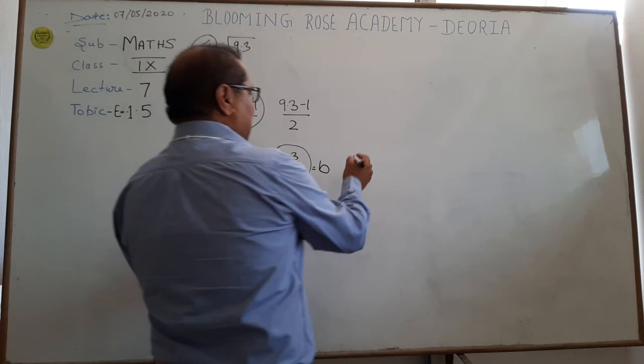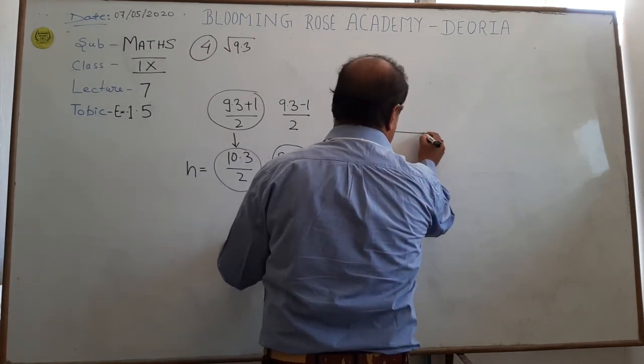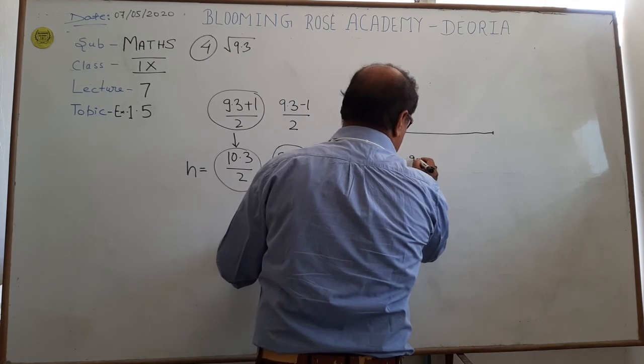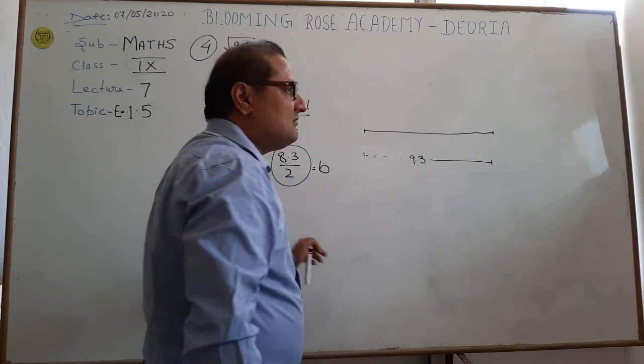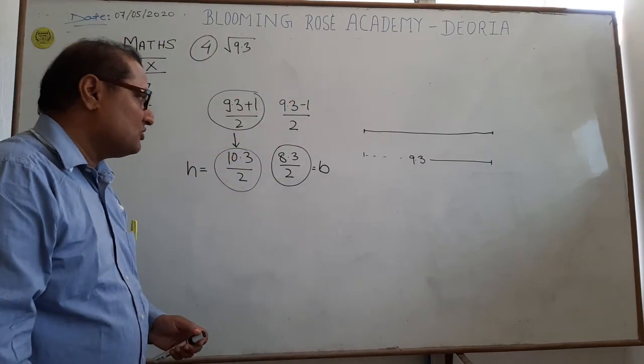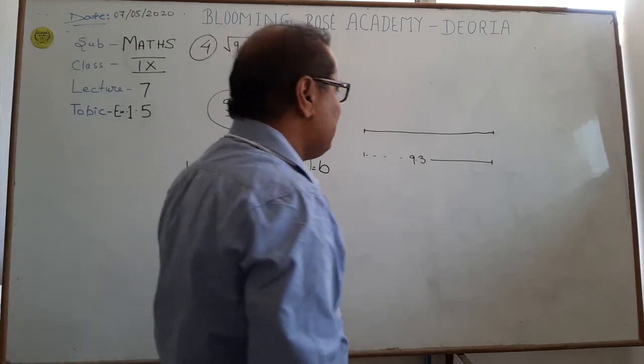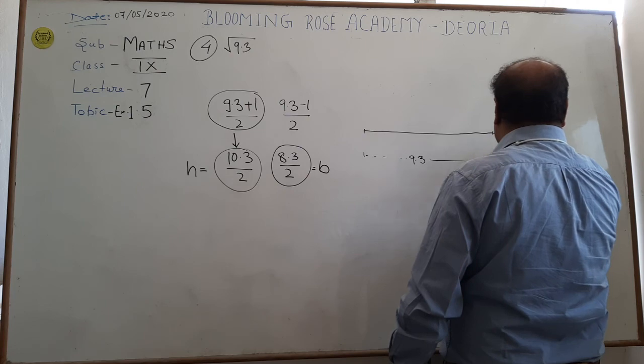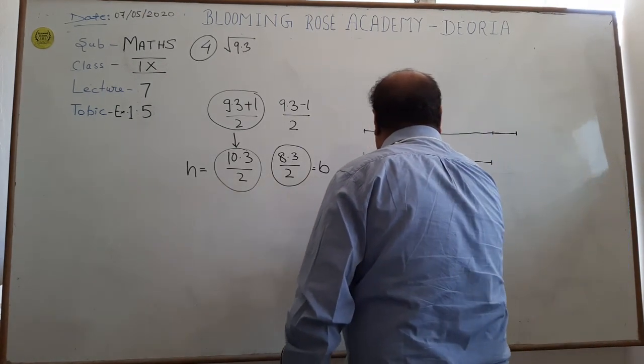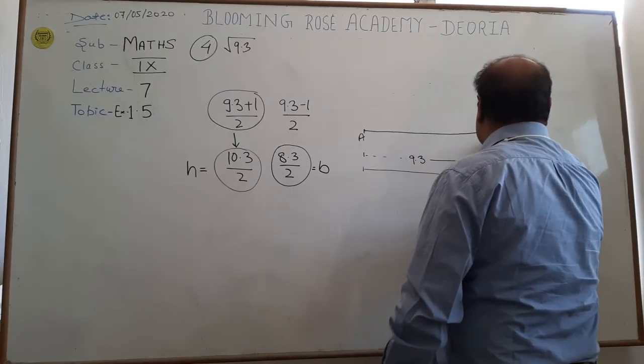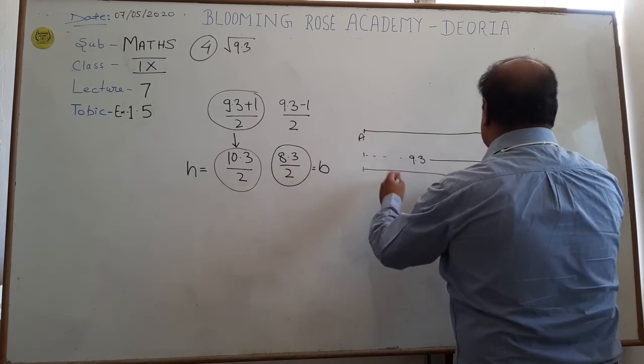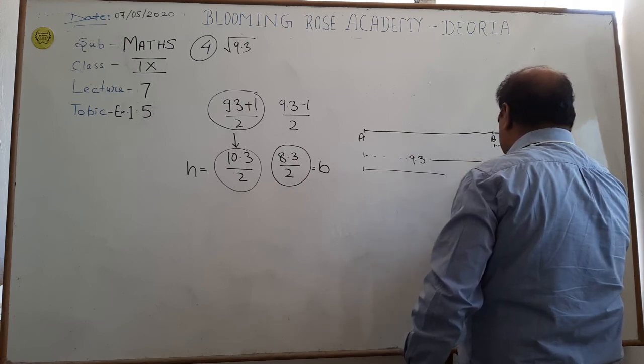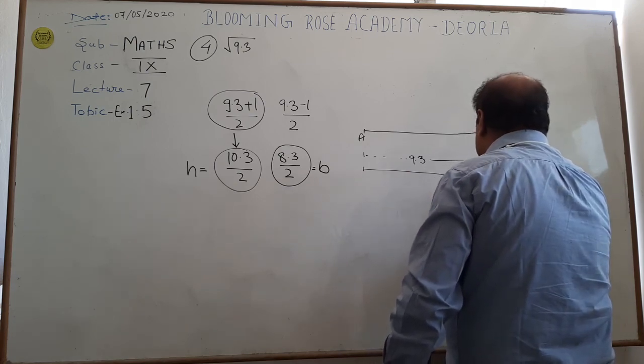If we are representing only number line, first student, we take 9.3 on your number line. It means this is the 9.3, any unit you can take, just centimeter or inch, which is depend upon your suitability. This 9.3, this length can be increased up to the one unit. Hence, the distance of this to this, suppose this is the A, this is the B. So A to B is taken as the 9.3 and this B to C is taken as the 1 unit.